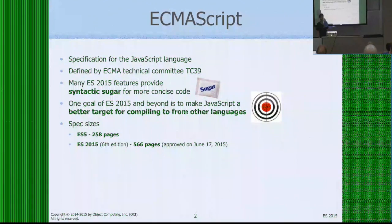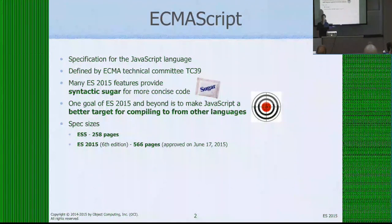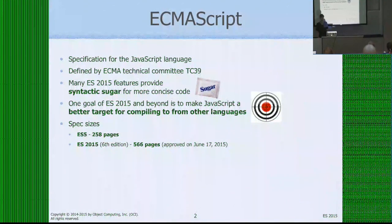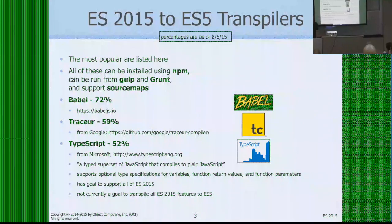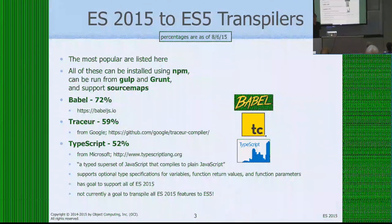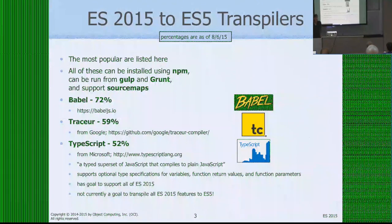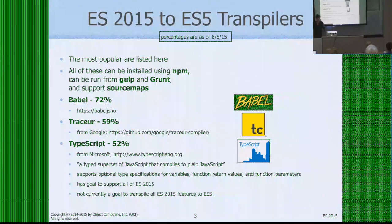One thing that's really noticeable about this version of JavaScript is that the spec just ballooned. The previous version was 258 pages and now this new version is 566 pages — a lot of new features. The future plans are to have a new release of the spec every year, so next year we'll have ES2016 with a much smaller set of new features than we saw this time, and I think that's a good idea.